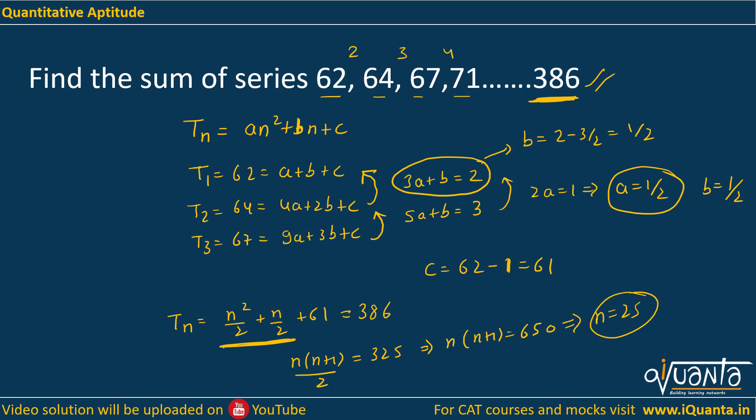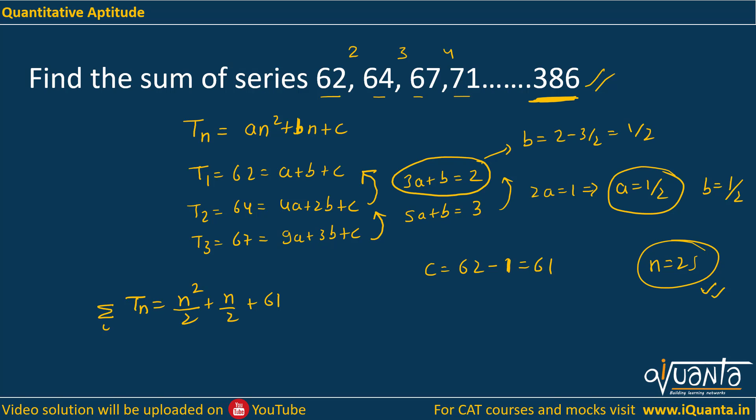After we get N equal to 25, we will have to find out sum till 25. That means we will perform summation from 1 to 25. We can write it as sigma N square, half comes outside the sigma, then sigma N, half will come out, then sigma 61 will come out, sigma 1 will remain inside, and this will be from 1 to N or 1 to 25.